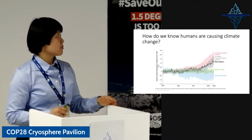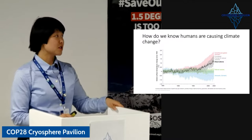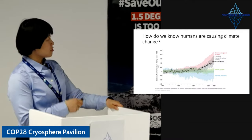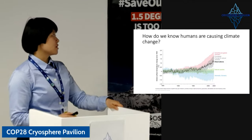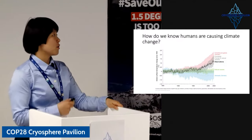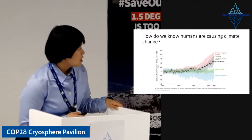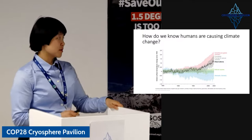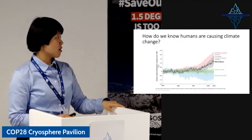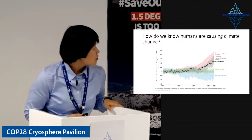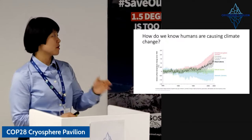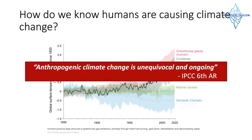This warming was clearly due to a lot of components. The black line here shows the observations of global surface temperature since 1950, which can only be explained when we incorporate the greenhouse gases emitted by human activities shown in red, natural causes shown in green, aerosols due to human activities shown in blue, and the combined natural causes shown in gray — matching the observation lines. The latest IPCC sixth report stated that anthropogenic climate change is unequivocal and ongoing.